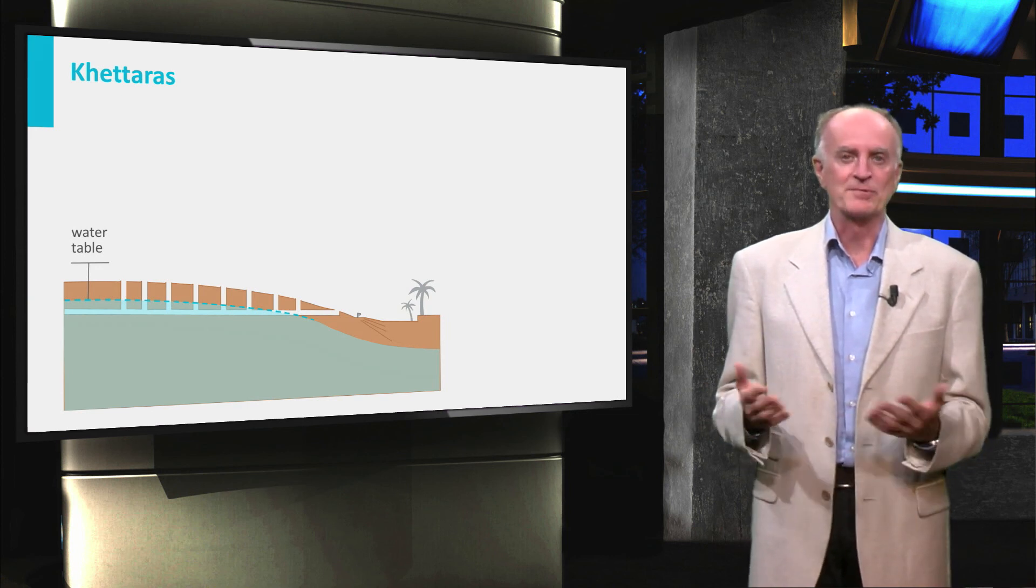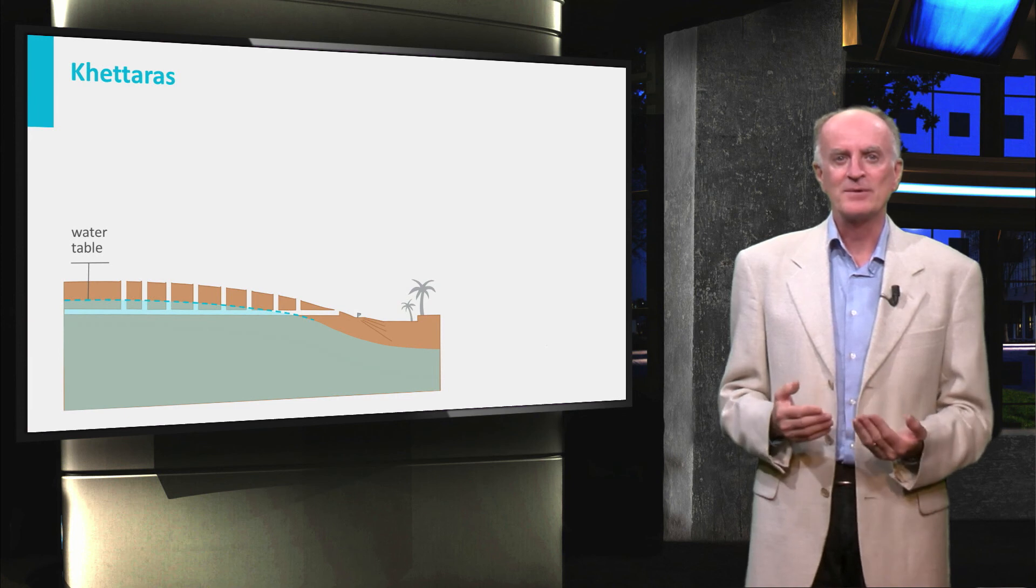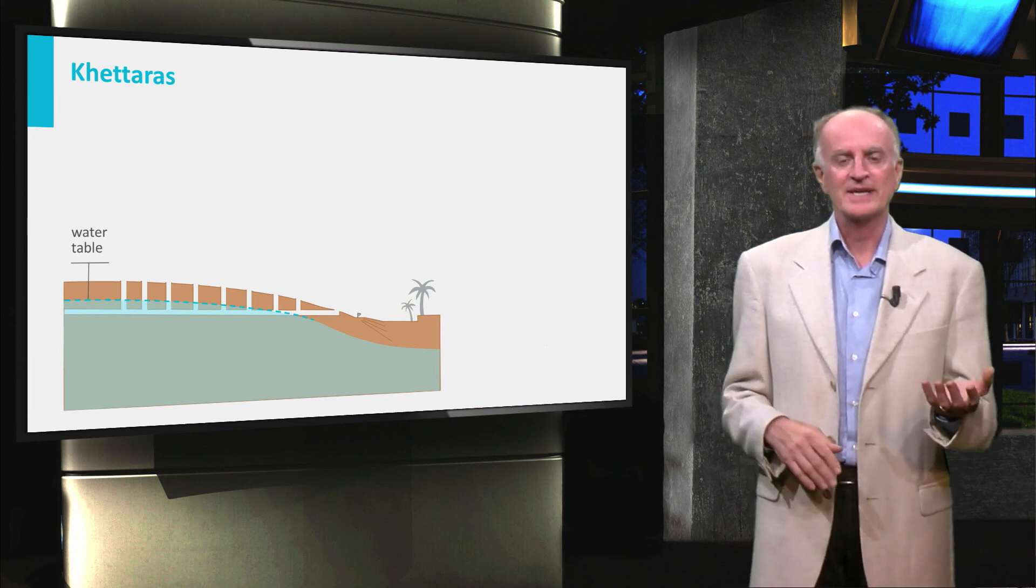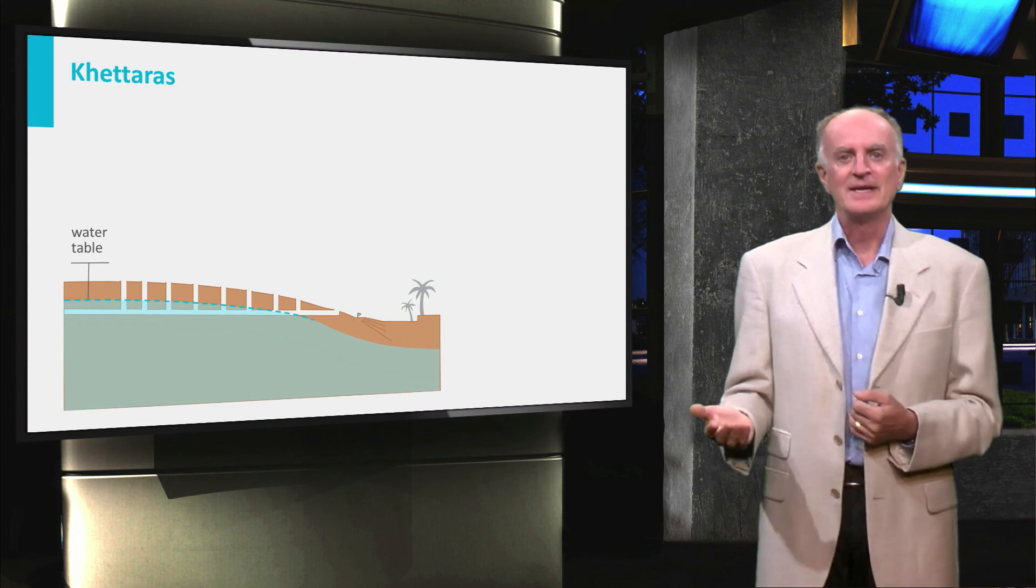People in many countries, such as Iran, had realized already that the water table had a slope and was higher towards the recharge areas in the mountains than in the low domains.